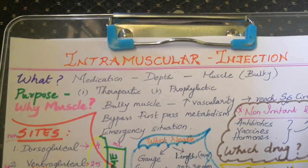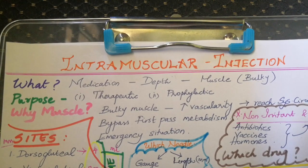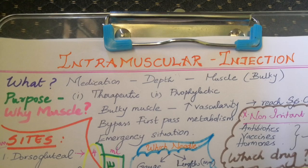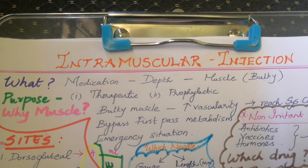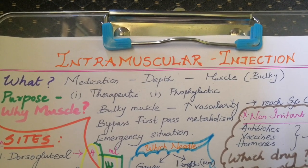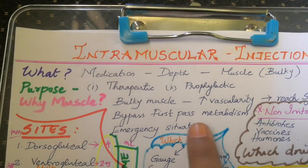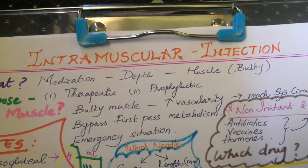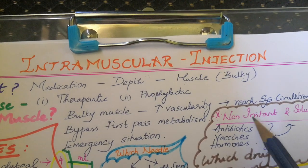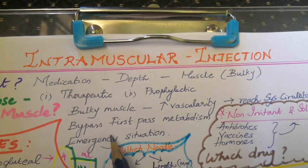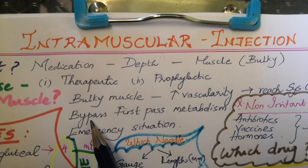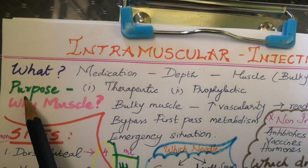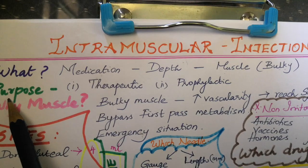Intramuscular injection is injecting medication deep into a bulkier muscle. The bulkier muscle is opted because it has higher vascularity, allowing the drug to reach systemic circulation earlier. It also bypasses first-pass metabolism, and can be used in emergency situations.